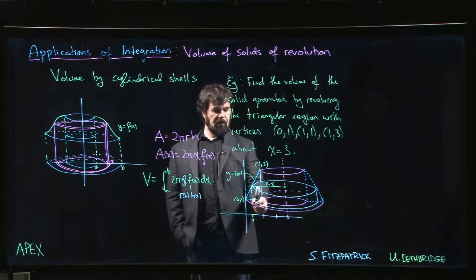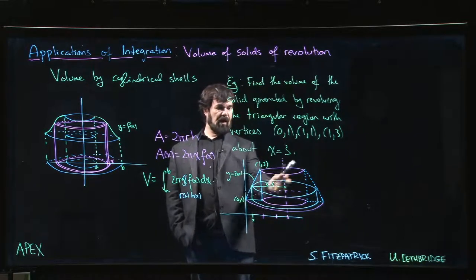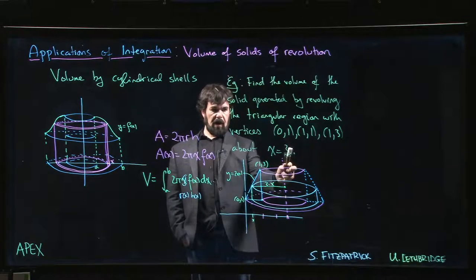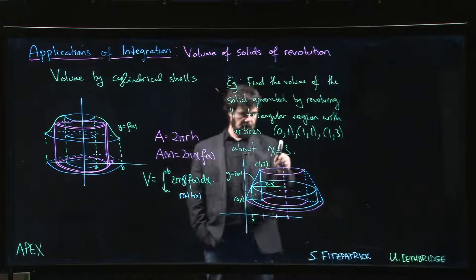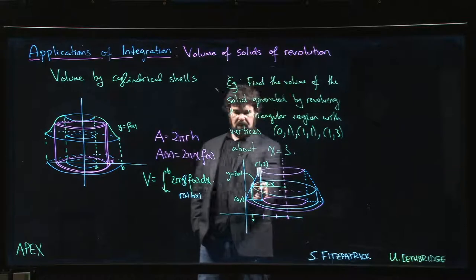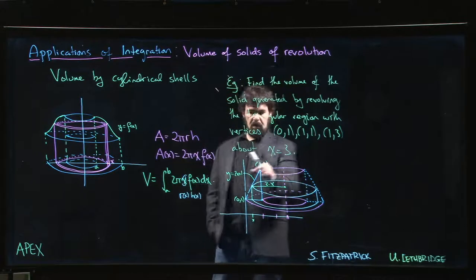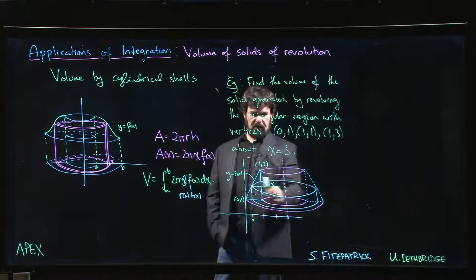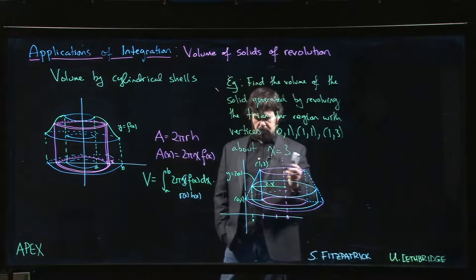And we're going to revolve it, but this time instead of revolving about the x-axis, we're revolving around a different vertical axis. This time we're doing x equals 3. So here's the line x equals 3. So we're going to take this triangle, we're going to revolve it around the axis. We're going to generate this shape here.